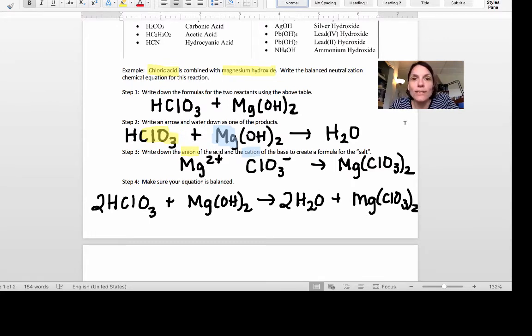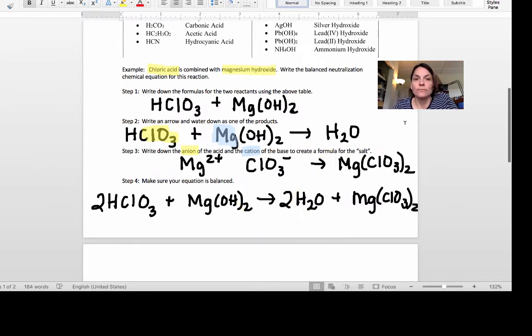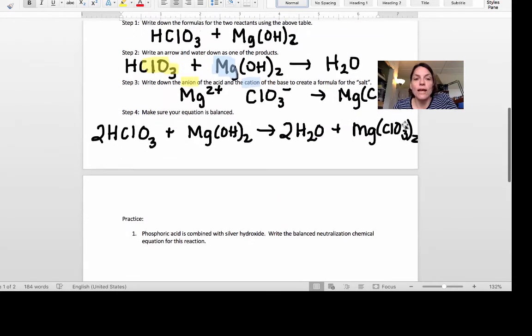Here to make it a balanced chemical equation, we need a coefficient 2 in front of the HClO3 and we need a 2 in front of water. Okay so let's try one together.